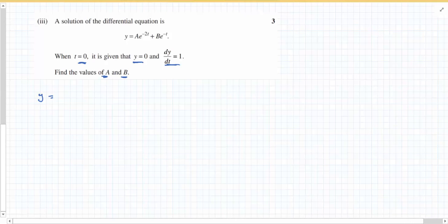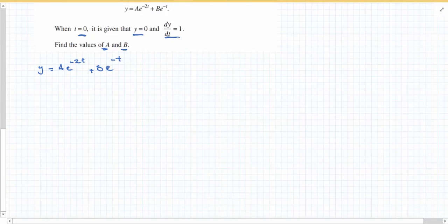So I have y equals a e to the negative 2t plus b e to the negative t. Now the question says when t equals 0, y equals 0. So I'm going to substitute that in. 0 equals... If t is 0, e becomes 1. So that's a plus b.